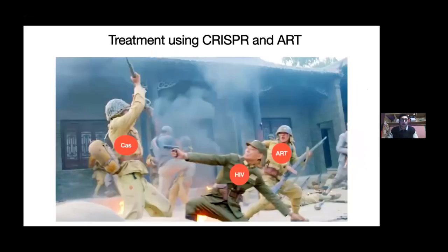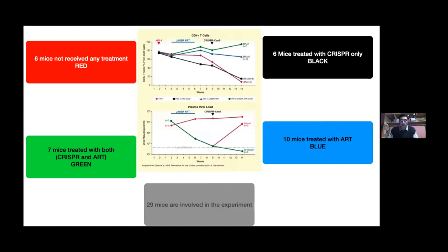The last method we will discuss is treatment using CRISPR and ART together, attacking HIV from two sides. In a study published in 2019 from Temple University by Professor Khalil, 29 mice were involved. Six mice received no treatment, six mice received CRISPR treatment only, ten mice received ART treatment only, and seven mice received both ART and CRISPR treatment.